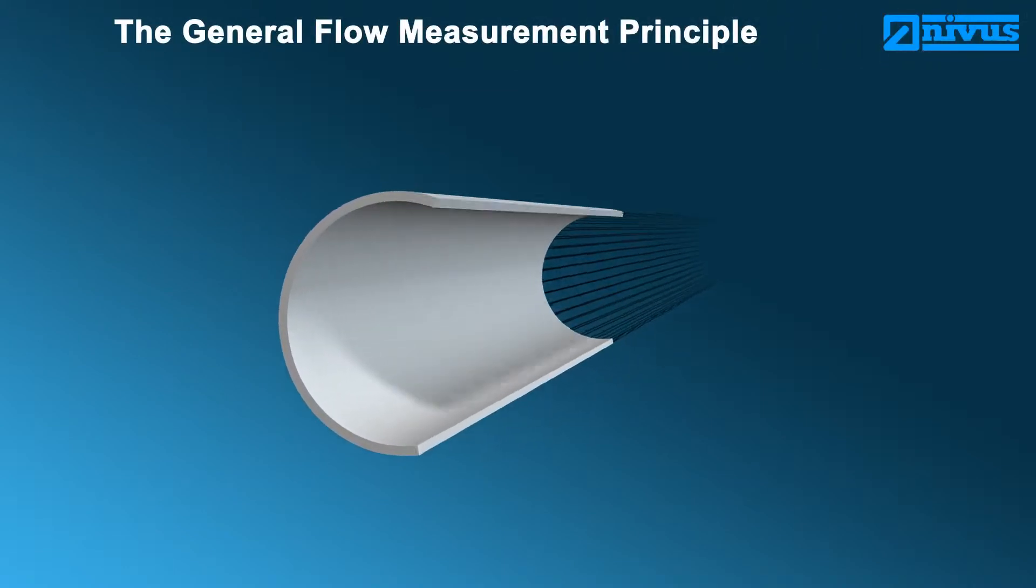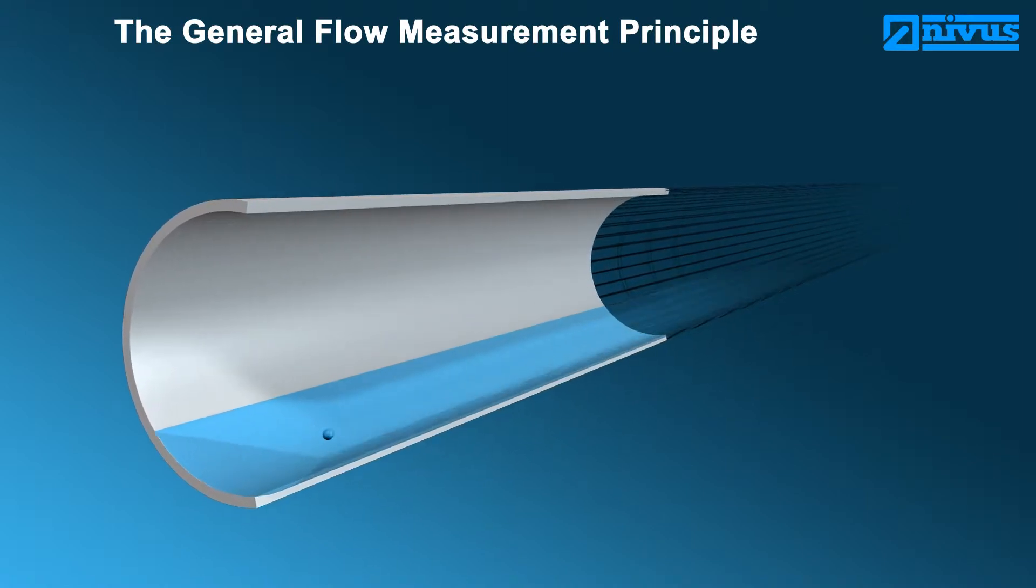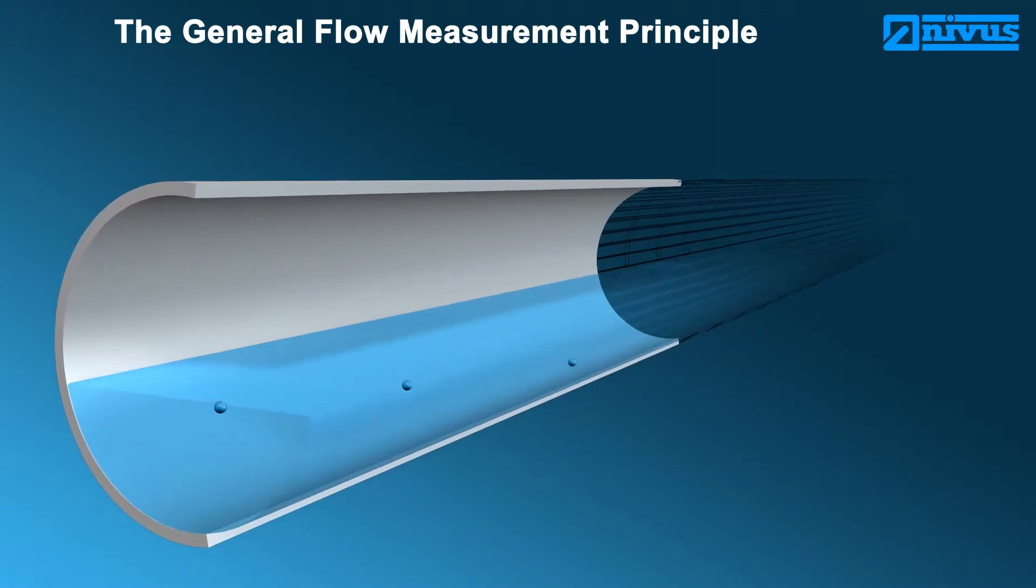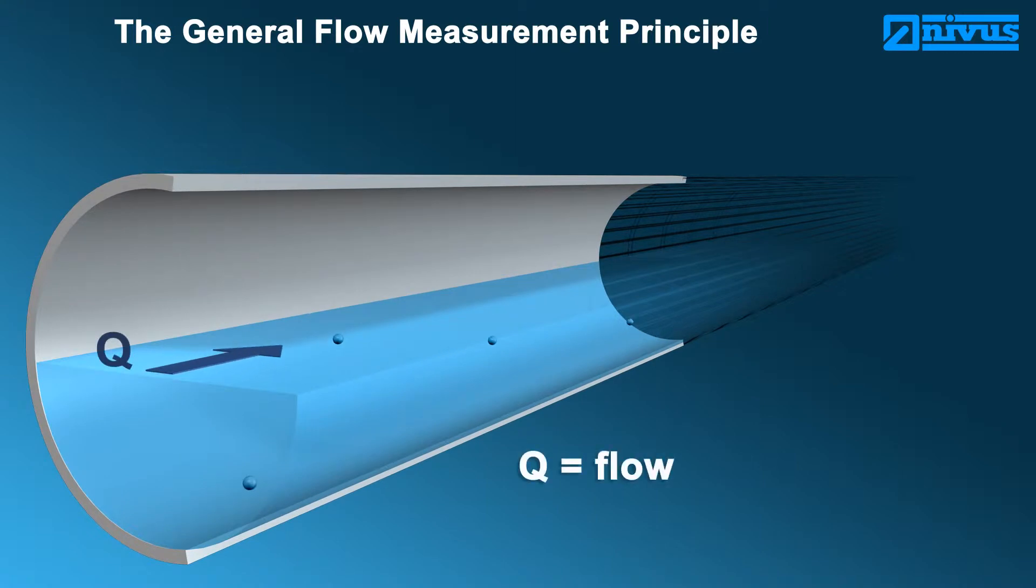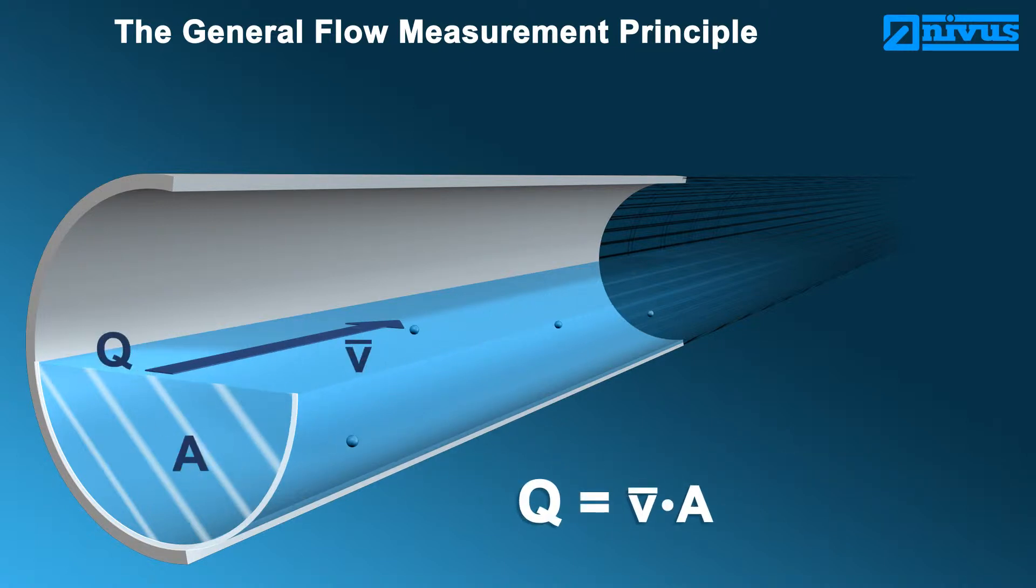The flow measurement principle. Flow cannot be measured directly. There are various factors required to detect the flow Q, such as the average flow velocity and the flow cross-section. From this, the general formula is obtained: Q equals V average times A.